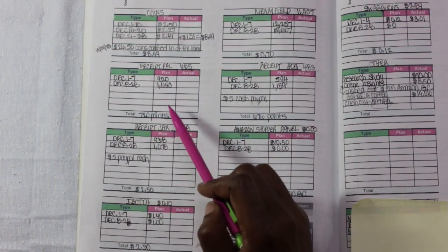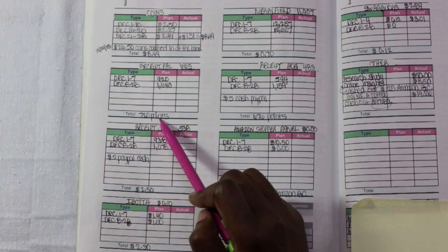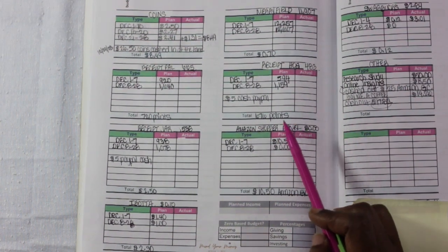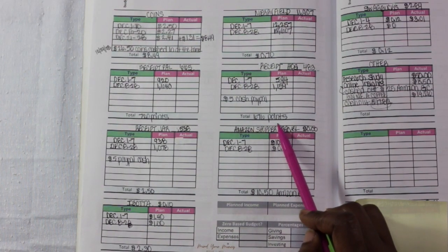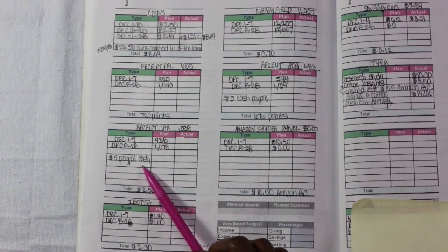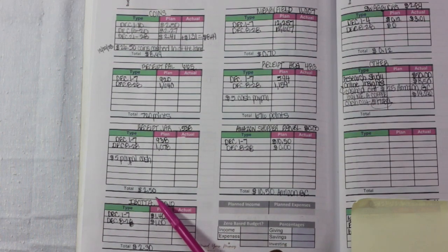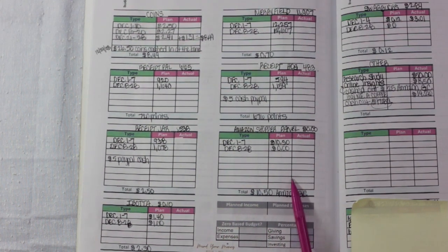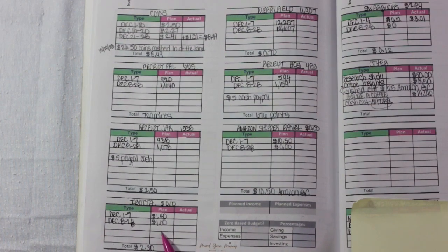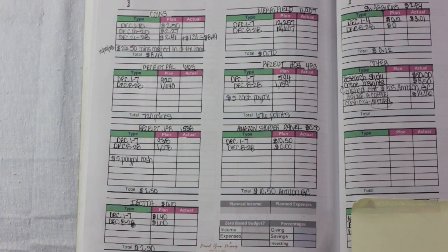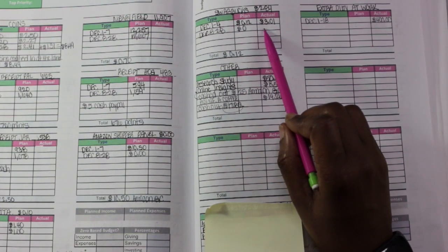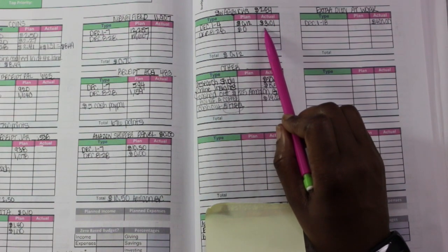Next we have Receipt Pal and earned 720 points in that one. Next we have Receipt Hog. I did cash out for $5 in PayPal and that was 676 points that I earned for that app. Next we have Receipt Jar and that was $5 of PayPal cash that I cashed out for and I earned $2.50 from them. Amazon Shopper Panel. That was $10.50 Amazon gift card that goes straight to my Amazon account. And then we have Ibotta. I earned $2.30 from them. Moving over here to Swagbucks. I earned 12 cents and so now I can go ahead and cash out for a $3 gift card.